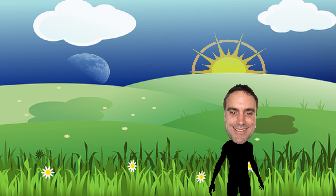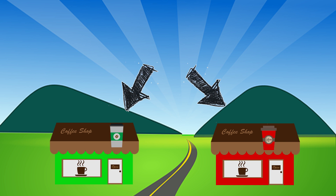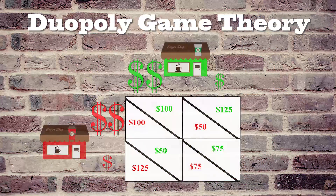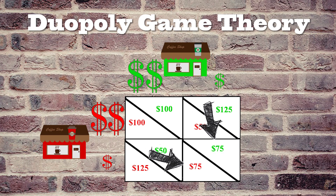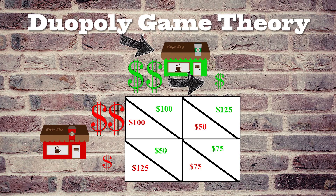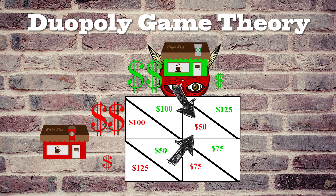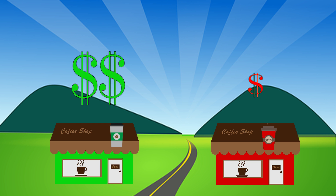We can apply game theory to a variety of competitive and cooperative environments. A simple example is that of an industry duopoly, where there are two competing businesses. Both sell identical products and want to maximise their own profits. If they both set high prices, they both make a profit of $100 each. If they both set low prices, they make a profit of $75 each. However, if one sets high prices while one sets low prices, the business with the low prices makes $125, while the high-priced business only makes $50. Clearly, it's better overall if they both keep their prices high, but the incentive to cheat is often all too tempting.